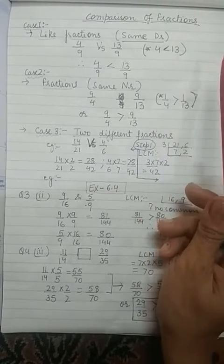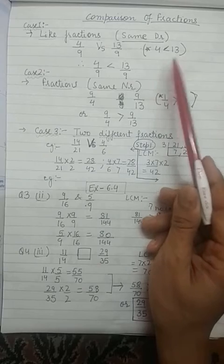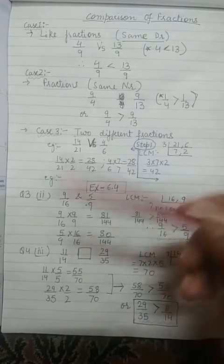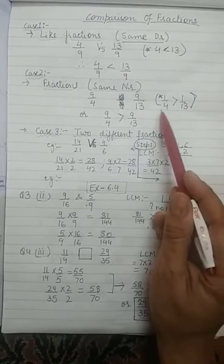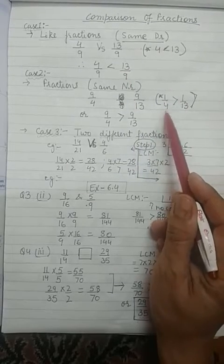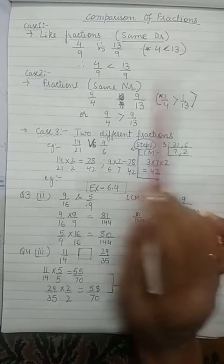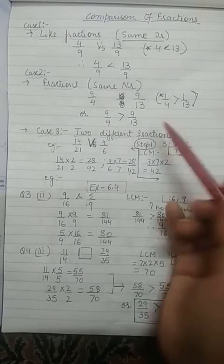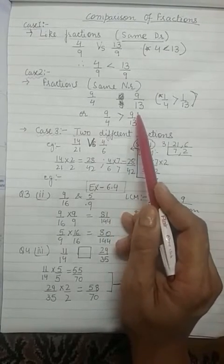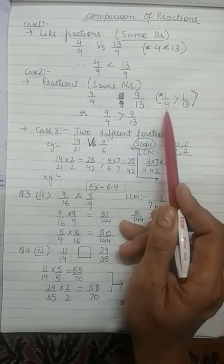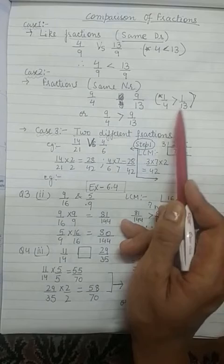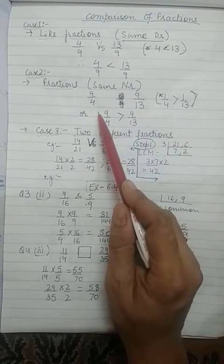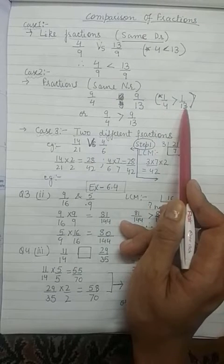In Case 1 we use the normal concept — whichever digit is smaller or greater. But in Case 2, you have to think in reverse. If you see 4 here, which is normally smaller than 13, here we think in reverse. Why? Because the digits are in the denominator. So 4, which is actually a smaller number, is considered greater because it is in the denominator. So 4 becomes greater and 13 becomes less.